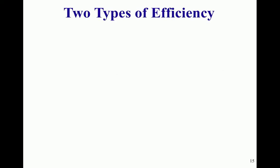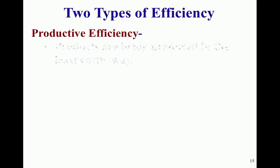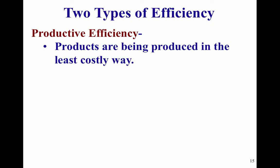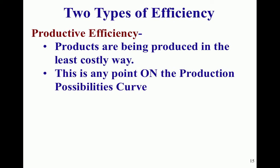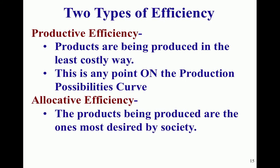We haven't talked about efficiency yet, so you're going to become more familiar with these two different terms. There's productive efficiency, which is very simple — products are being produced in the least costly way, there's no unemployment. As you'll see in the Paul Solman production possibilities curve videos online, it makes the point about unemployment very clear. It's producing at a point that's on the PPC. If it's on the line, it's productively efficient, meaning we're using all of our resources.